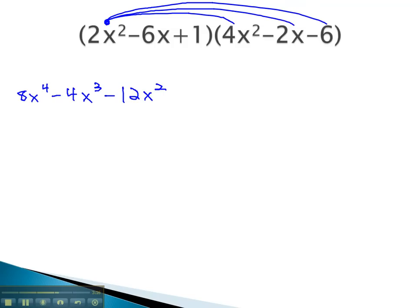Now, we move to the second term, the negative 6x, and distribute it through the following polynomial. Negative 6x times 4x squared is negative 24x cubed. Negative 6x times negative 2x is positive 12x squared. Negative 6x times negative 6 is positive 36x.